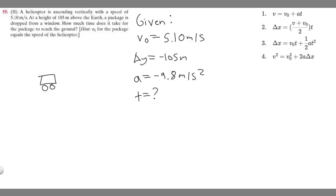So delta Y, which in our case is minus 105, equals V sub 0, which is 5.10, times T plus one half times A, which is minus 9.8, times T squared. So minus 9.8 times one half is minus 4.9 times T squared.